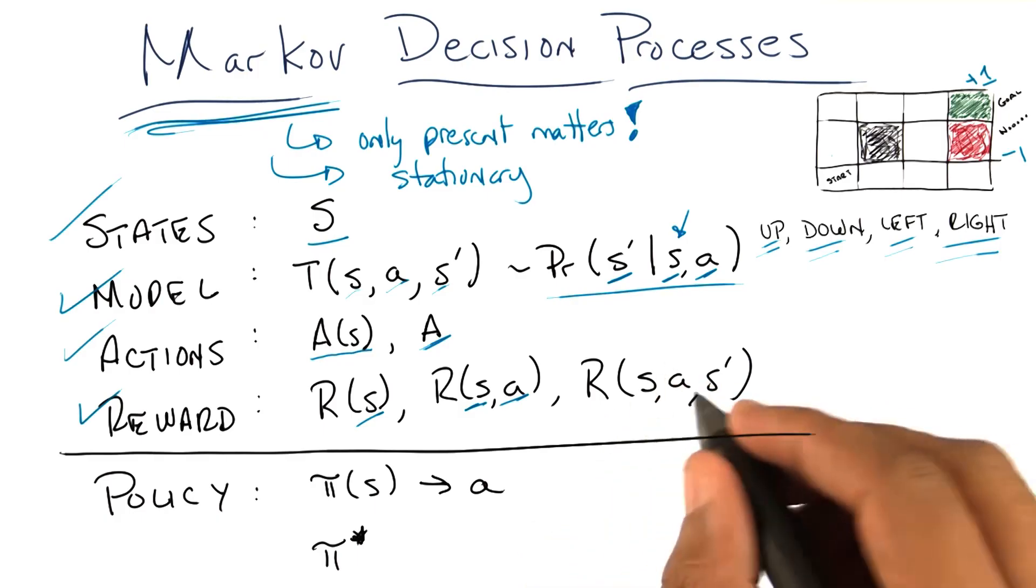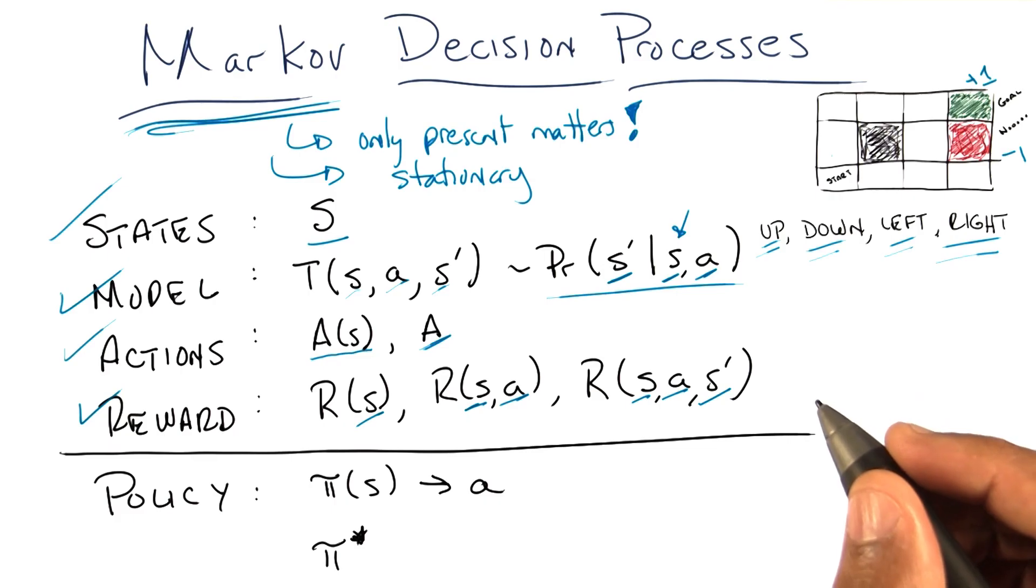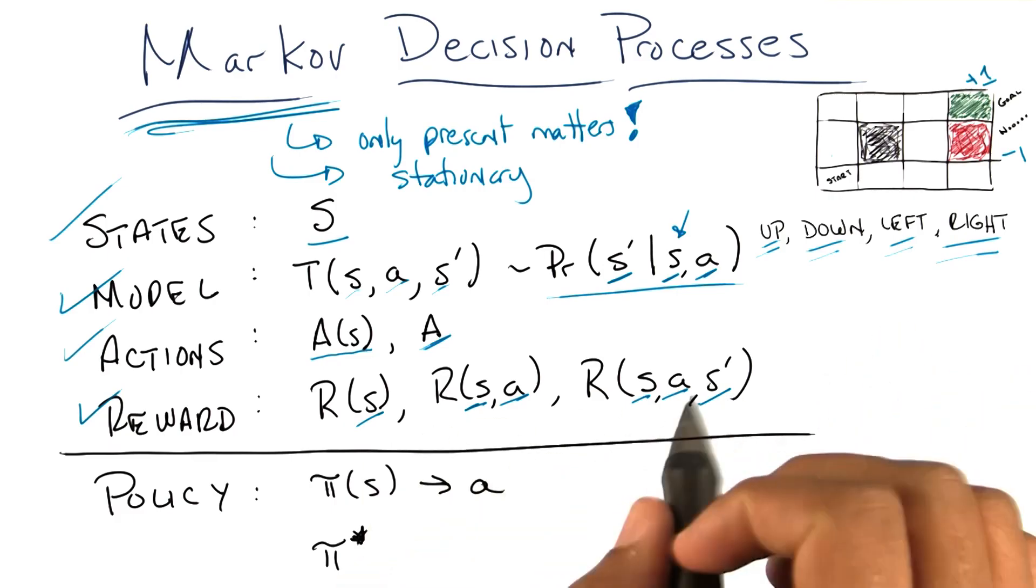There's a reward for being in a state and taking an action. There's a reward that you could get for being in a state, taking an action, and then ending up in another state, S prime. It turns out these are all mathematically equivalent.